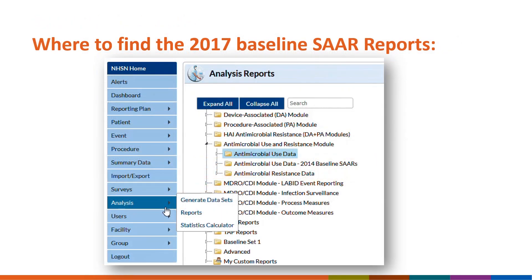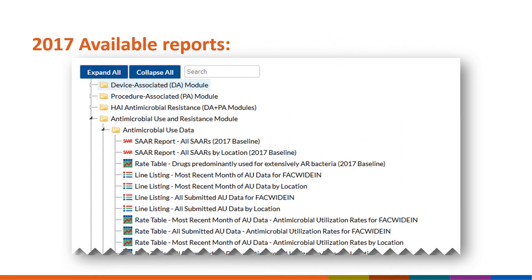After generating a new dataset, navigate to analysis on the left-hand navigation bar and select reports. Select the antimicrobial use and resistance module drop-down option and navigate to the antimicrobial use data folder to access 2017 baseline SAR reports. Notice that next to the available SAR reports in the antimicrobial use data folder, the baseline year 2017 is listed in the title.